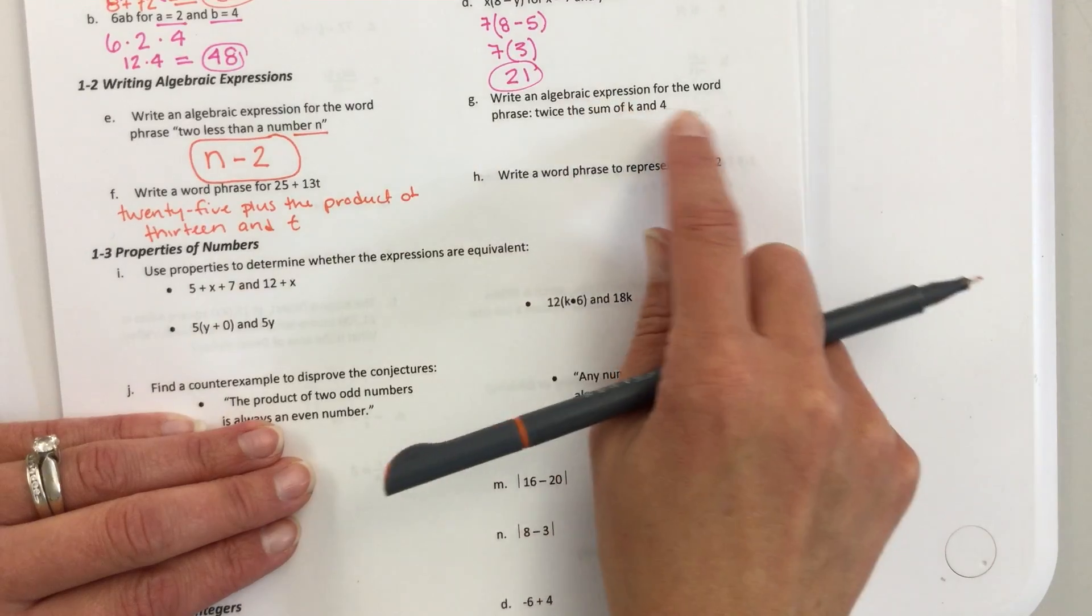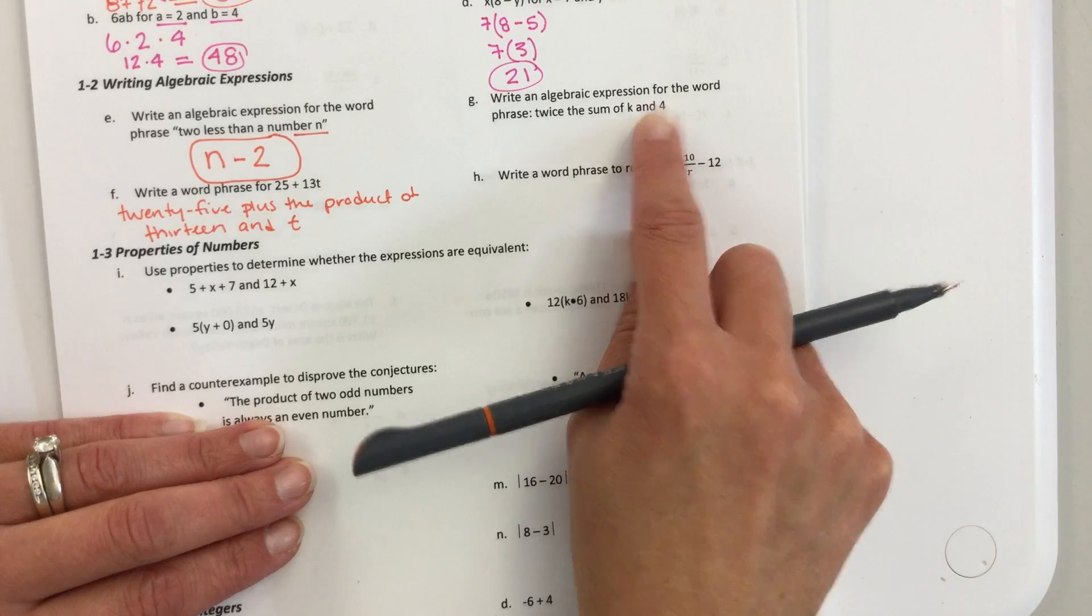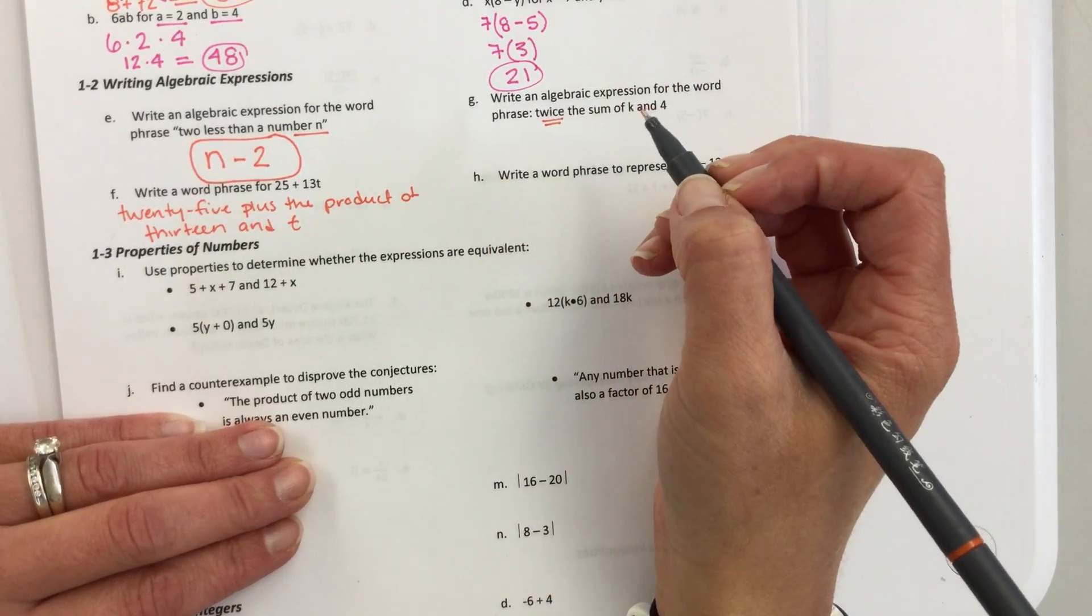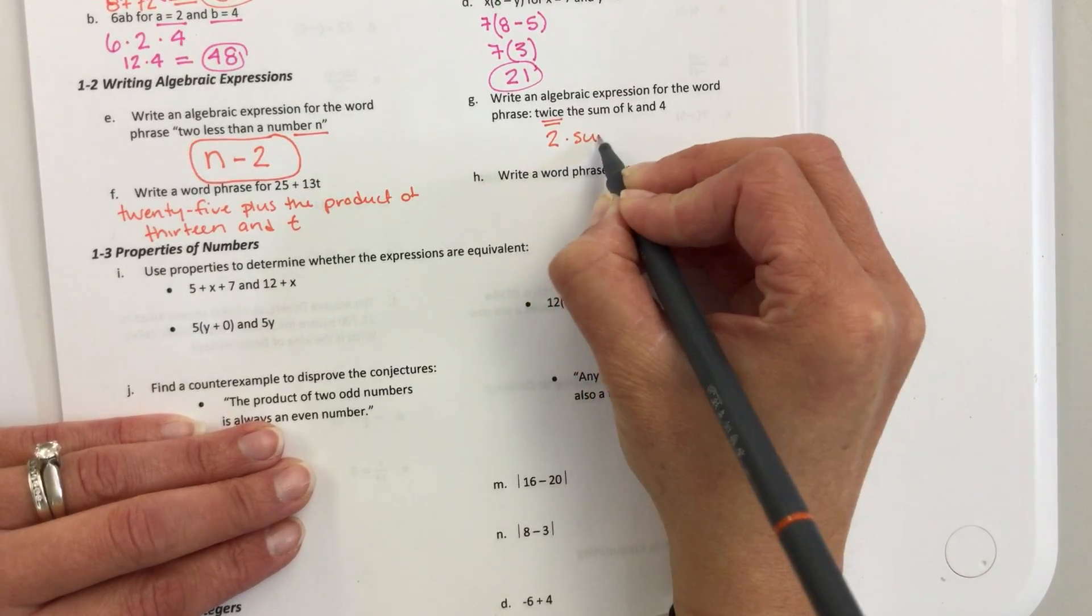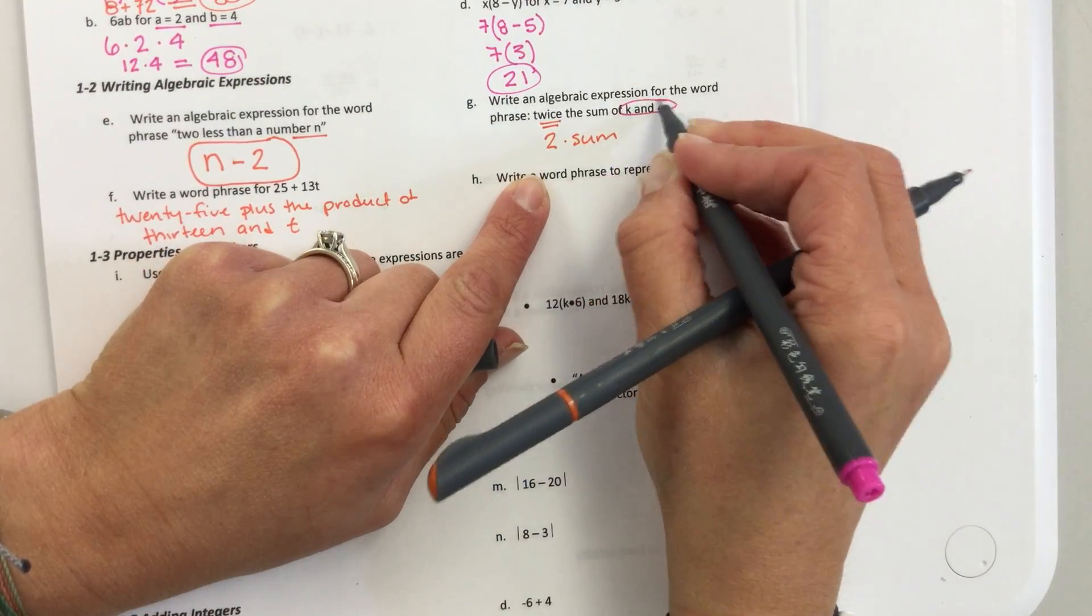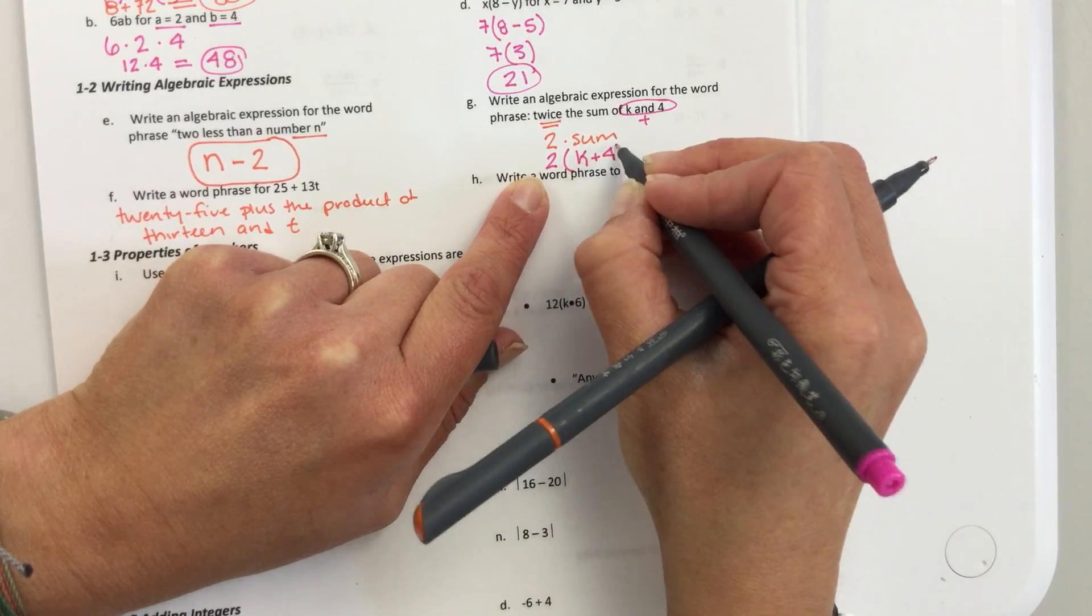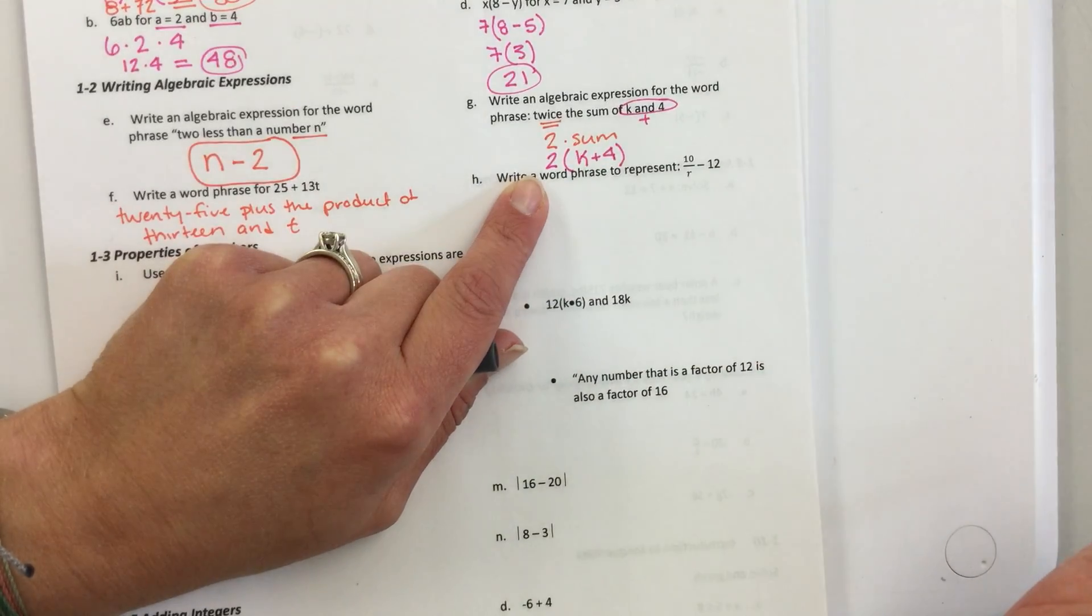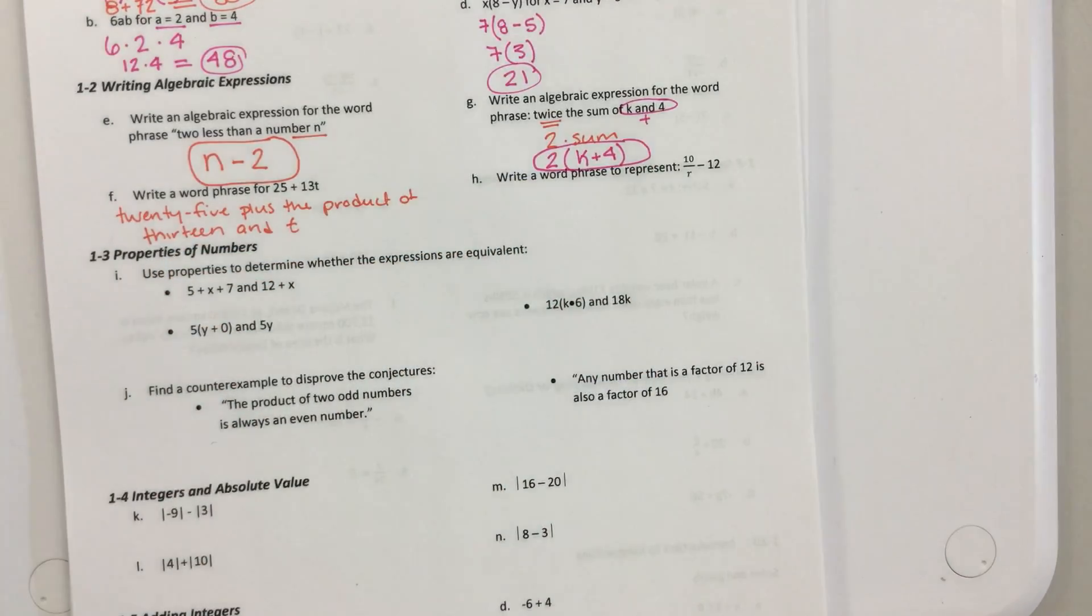Okay, the next one. Write an algebraic expression for the word phrase twice the sum of k and 4. So, twice something means multiply it by 2. So, twice the sum. What is the sum of? Well, k and 4 are being added. So, it's twice. This has to go in parentheses. A lot of you guys got these ones wrong on your quiz, because you didn't put parentheses around it. The sum, the difference, those are the answer to the problem.